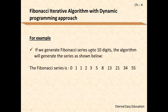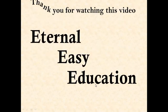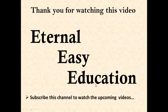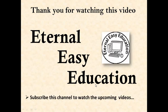If we generate the Fibonacci series up to 10 digits, the digits are: 0, 1, 2, 3, 4, 5, 6, 7, 8, 9, 10. I hope you have understood this. Thank you for watching this video — if you like this video, subscribe to this channel to watch upcoming videos. Thank you, have a good day.